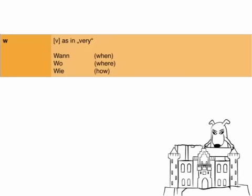Then we have W — in German pronounced like the English V sound. 'Wann', 'wo', 'wie'. Once again, please repeat after me: 'Wann', 'wo', 'wie'.